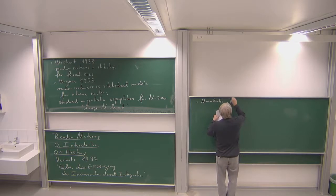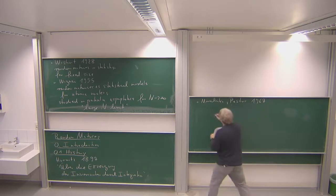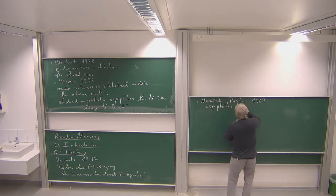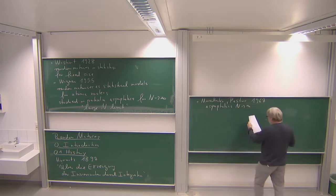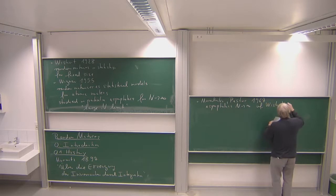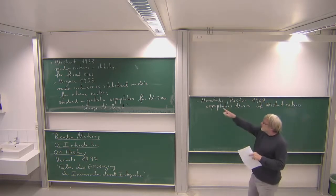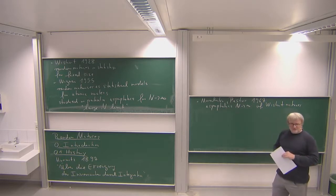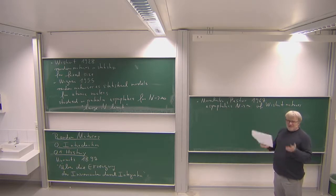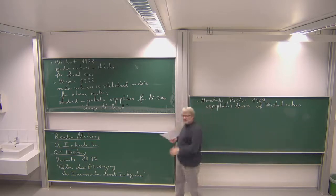Marchenko and Pastur in 1967 looked on the asymptotics — n goes to infinity — of the Wishart matrices. You see it took a long time from 1928 to 1967 to really answer this question, but essentially this question was not asked before, at least not in statistics.